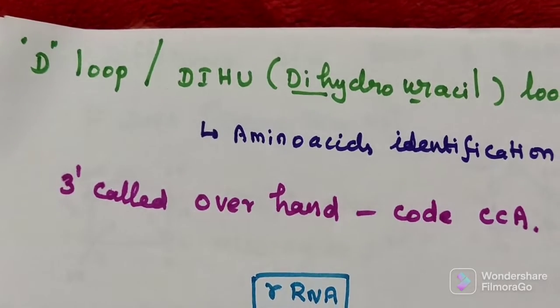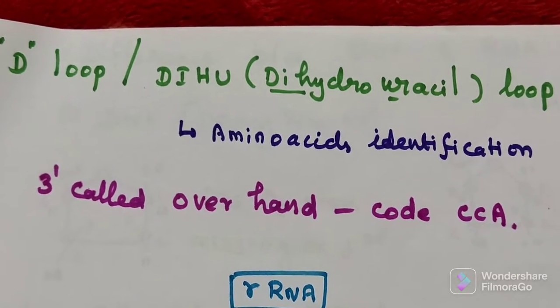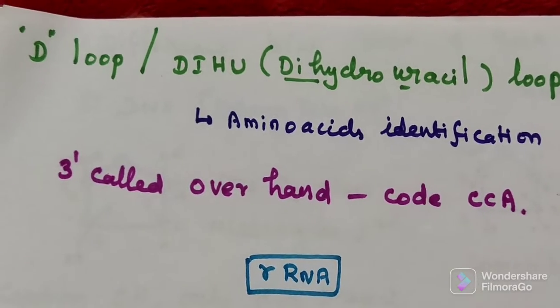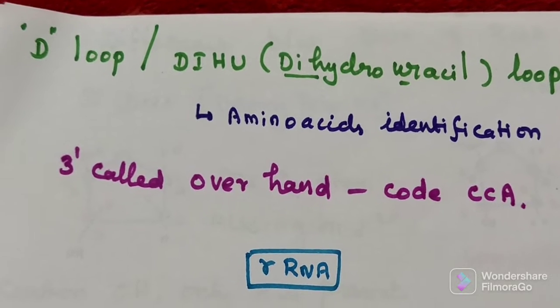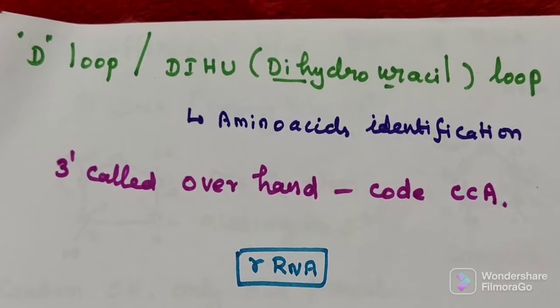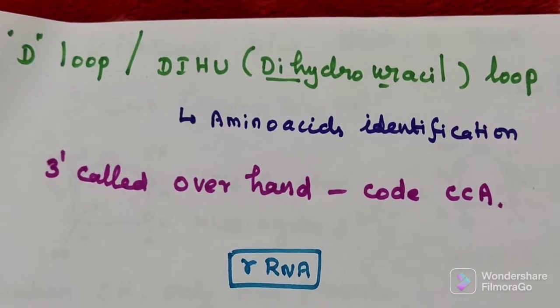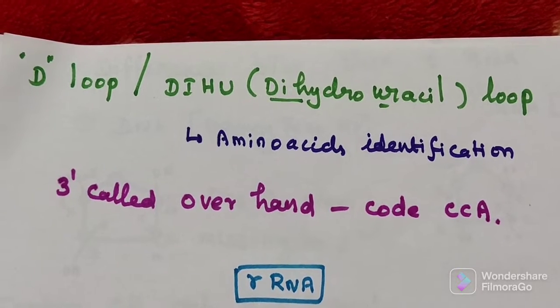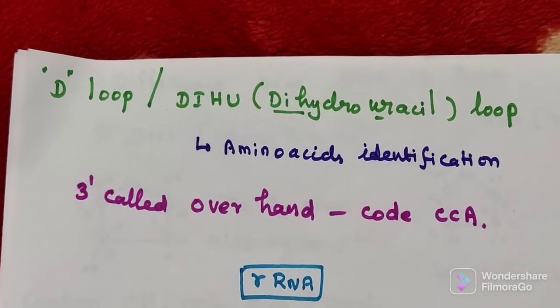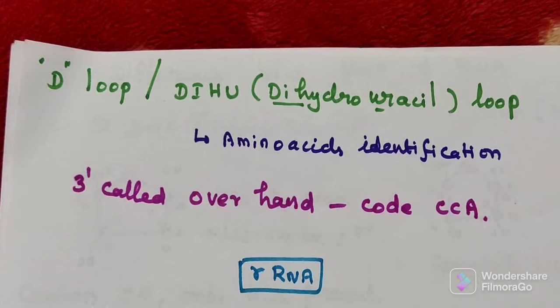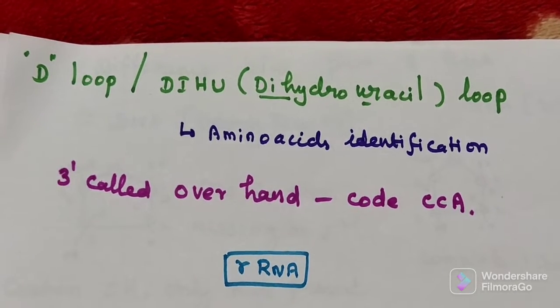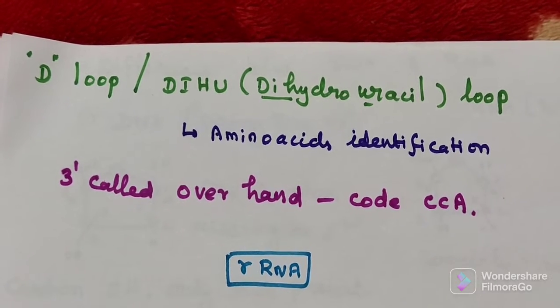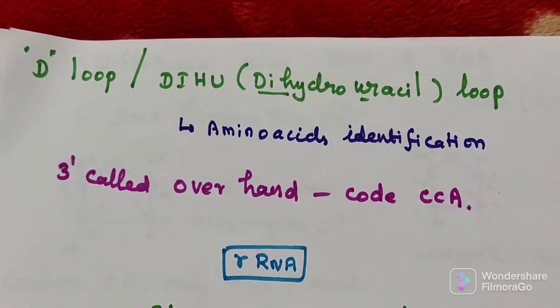The third loop is the D-loop, also called DIHU loop, where uracil is modified into dihydrouracil. The function performed by this D-loop is amino acid identification, the amino acid recognition site. So the anticodon reads the code from mRNA, the D-loop identifies which amino acid is brought, and the T-loop identifies which ribosome to attach to.